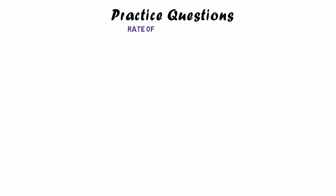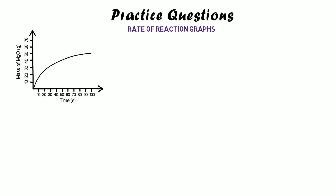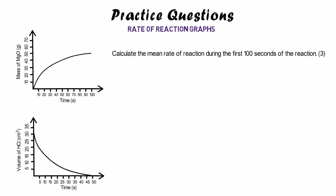Here are practice questions for rate of reaction graphs. First graph: the mass of magnesium is increasing, showing product being formed — calculate the mean rate of reaction during the first 100 seconds. Second graph: the volume of HCl is decreasing, meaning the reactant is being used up — calculate the mean rate of reaction during the first 10 seconds. Pause the video and have a go.